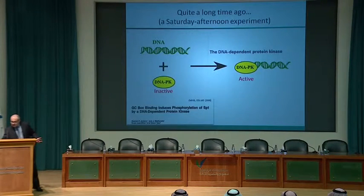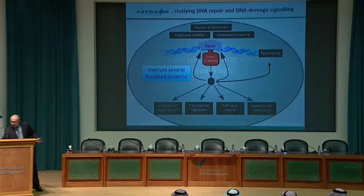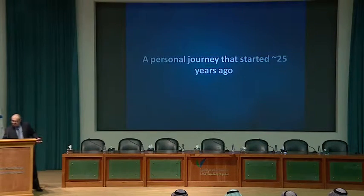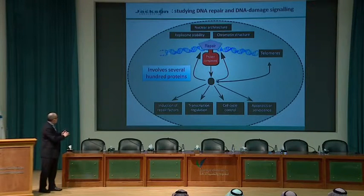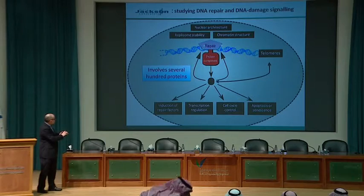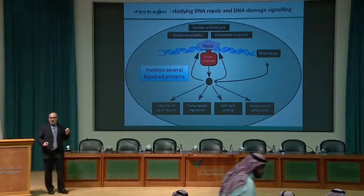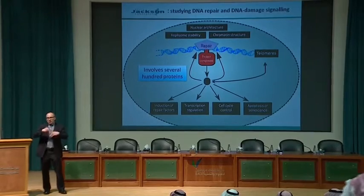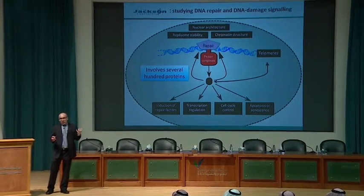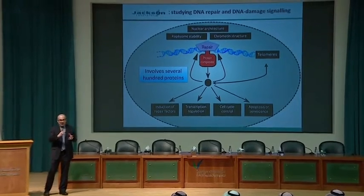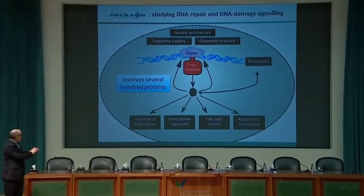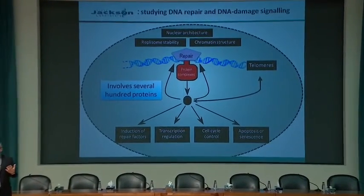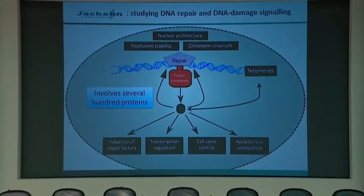Our cells contain many proteins. Certain proteins act as molecular policemen — they patrol the nucleus looking for broken DNA, and when it occurs they recognize it, bind to the damage, and trigger a range of processes within the cell, including DNA repair. These processes also control cell division, cell growth, and other activities.